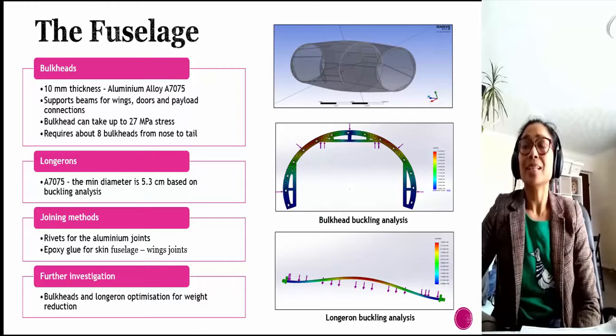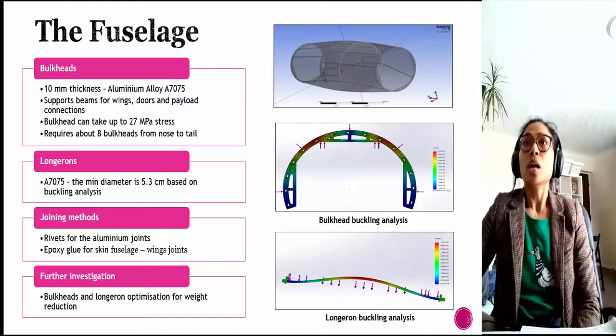For the bulkhead, the thickness is 10 millimeters and it is made of aluminum. The simulation shows the bulkhead can take up to 27 megapascals of load. Therefore, the bulkhead can take excess stress from the skin.